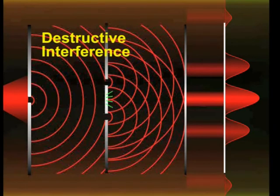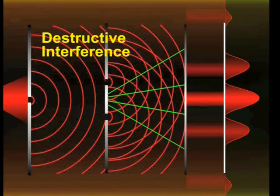Whereas, between the bright bands, a crest from one slit arrives at the same time as a trough from the other slit, and a dark band is produced.